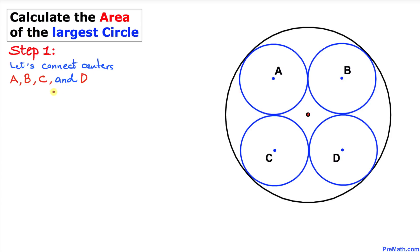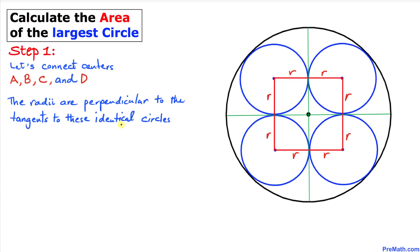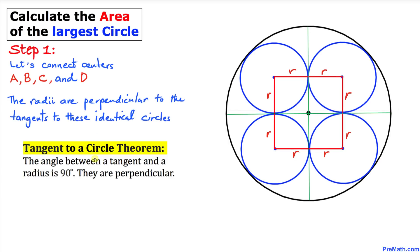Our first step: let's connect the centers A, B, C, and D. We connect A to B, A to C, C to D, and B to D. Here's our much nicer looking diagram. As you can see, each side represents the radius lowercase r for these identical circles — r likewise r, all the way around.